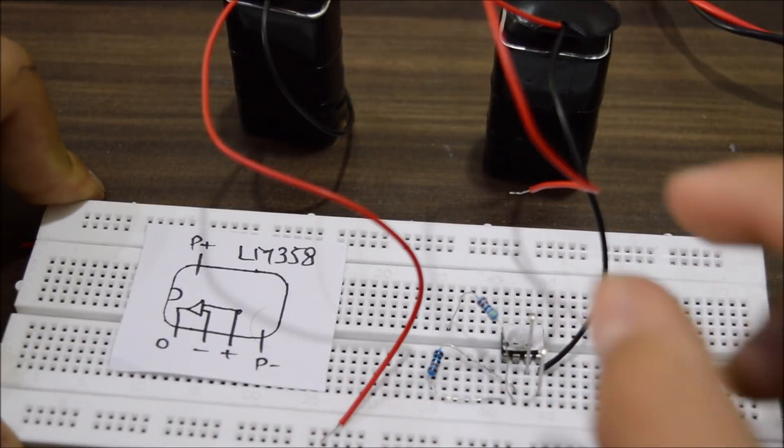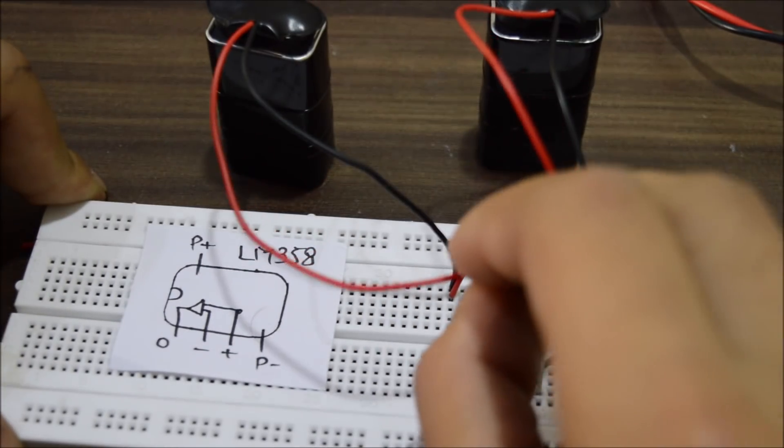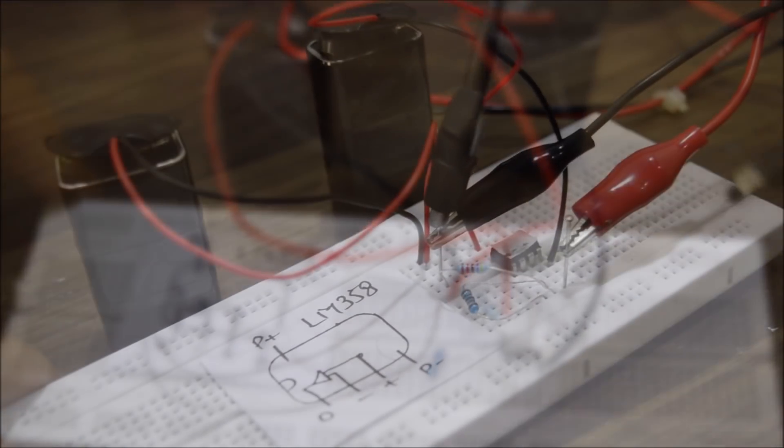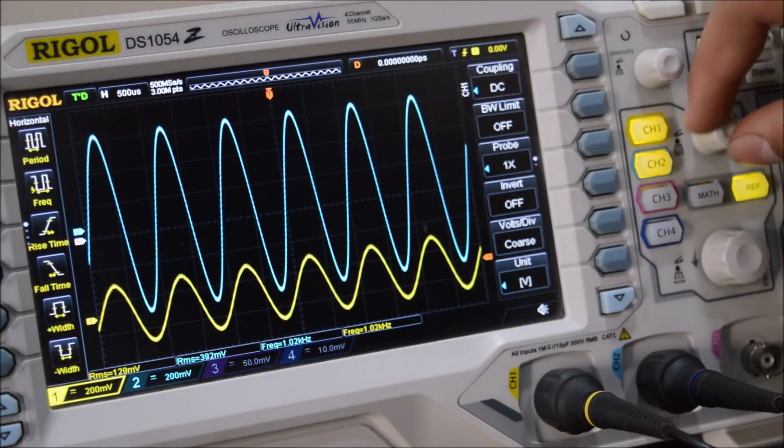Now let me connect the two 9V batteries in this configuration. So if I probe the output, you can see in the oscilloscope, we are getting a proper amplified AC signal.